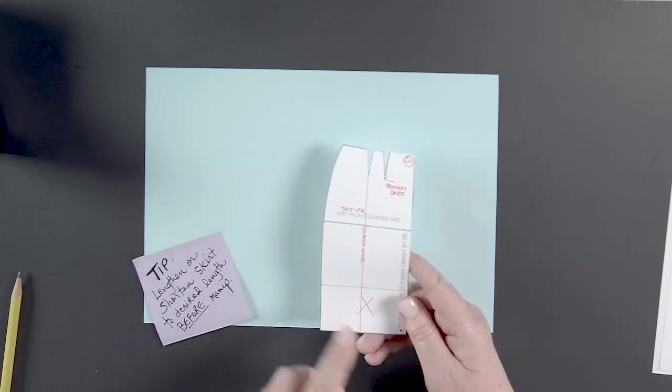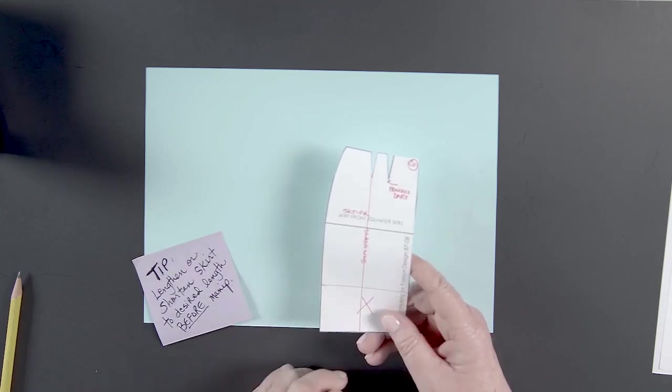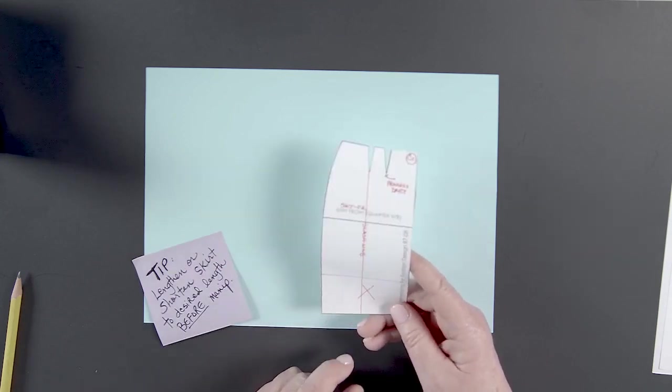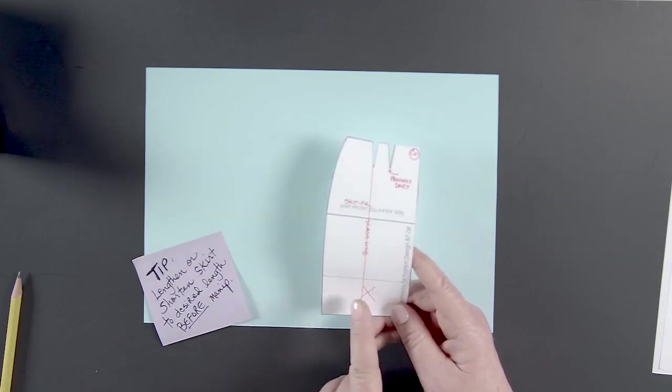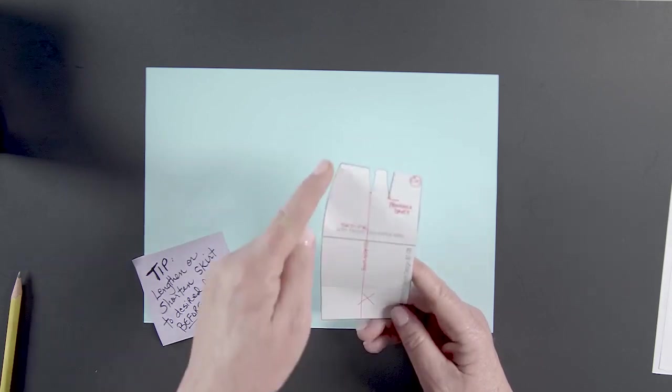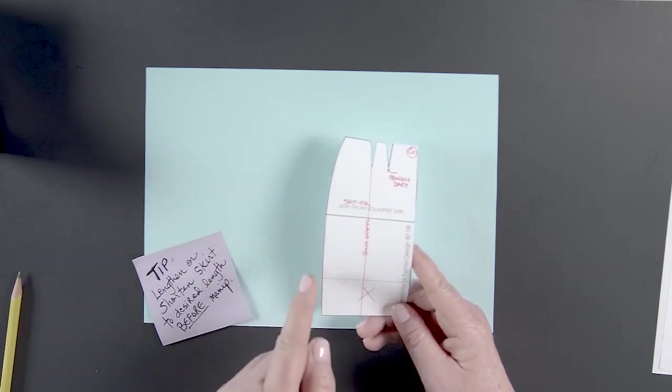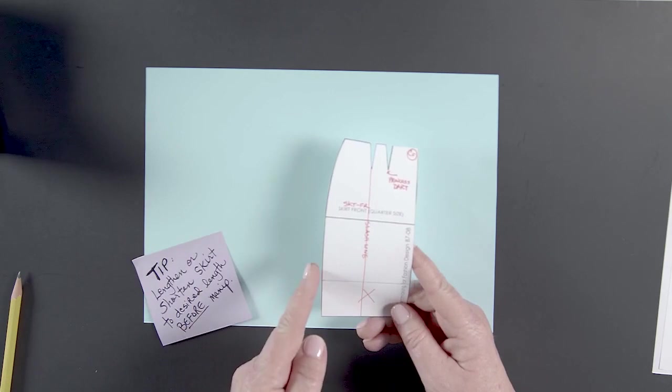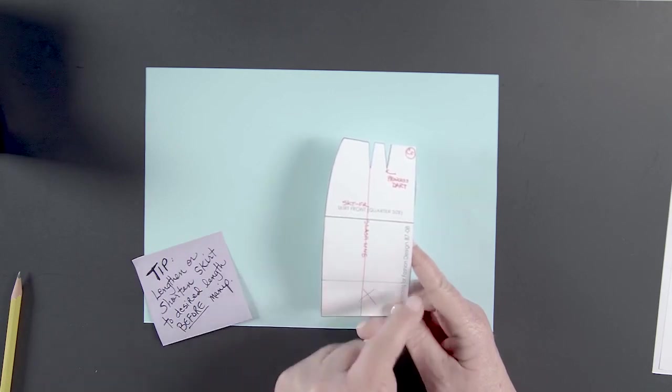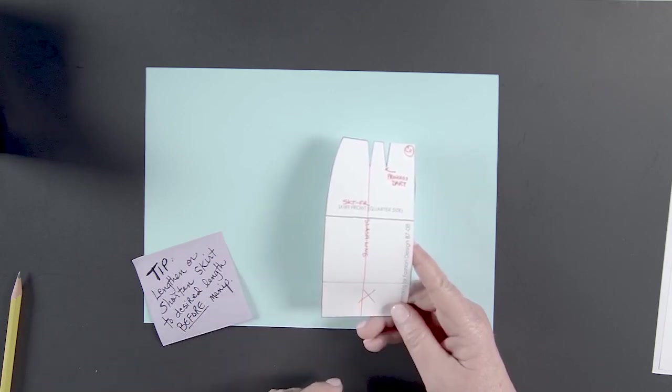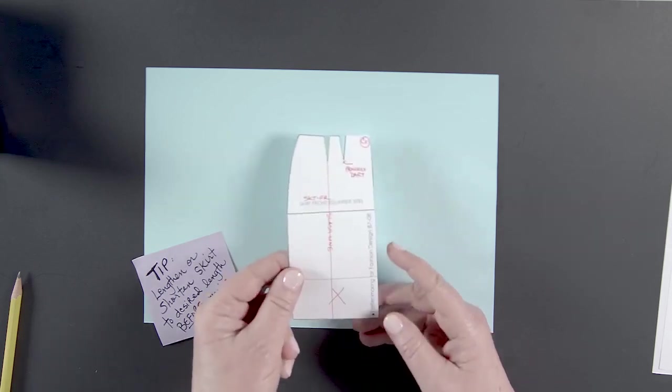So here we have a block that's a certain length. And if we know that we want the skirt to be 19 inches, the length of it to be 19 inches, we want to measure down here 19 inches, make a tick mark, draw a perpendicular line, and cut that off. For purposes of this exercise,